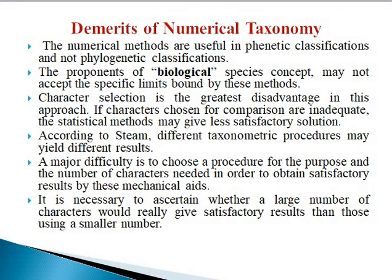The demerits of numerical taxonomy are as follows. Numerical methods are useful in phenetic classification but not in phylogenetic classification. The proponents of the biological species concept may not accept the scientific limits bound by these methods. Character selection is the greatest disadvantage in this system because numerical taxonomy is totally based on the selection of characters.